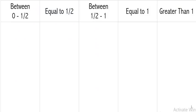We're first going to start out with fractions that do have pictures. We're going to sort the pictures: are they between zero and a half? Are they equal to one half? Are they between one half and one whole? Are they equal to one whole? Or are they greater than one whole?